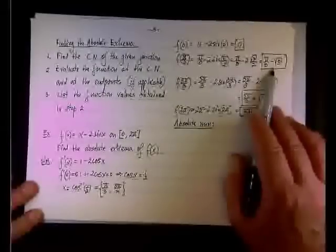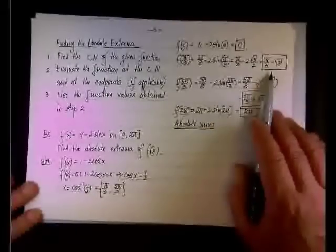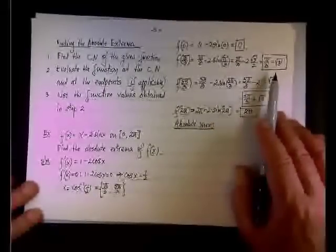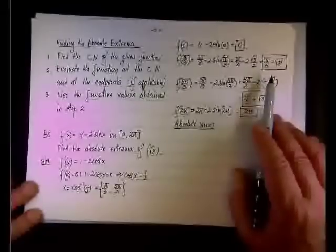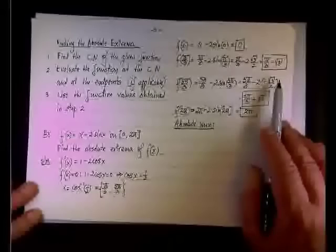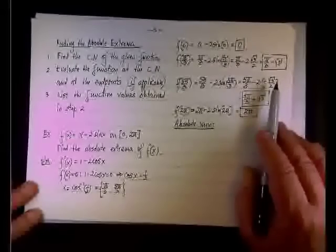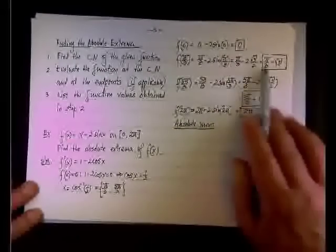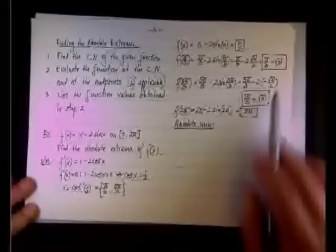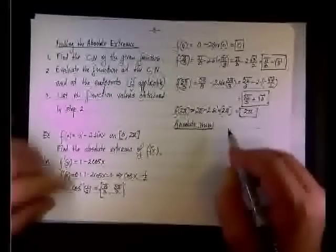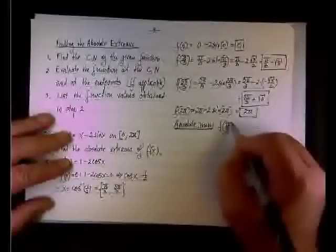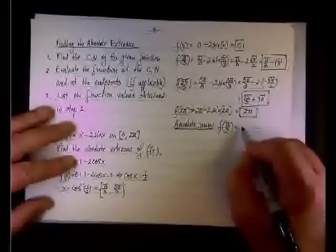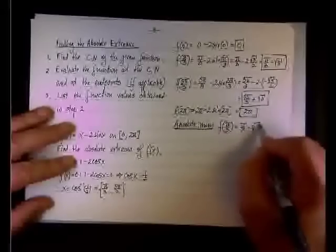Right, the competition will be between zero and pi over three minus the square root of three. But if you recall that the square root of three is 1.732, pi over three is 3.14 divided by three, so it's about 1.04. 1.04 minus 1.732 is a negative number, so it will be less than zero. The others are positive, so we can say quite safely that the absolute minimum is f of pi over three equals pi over three minus square root of three.